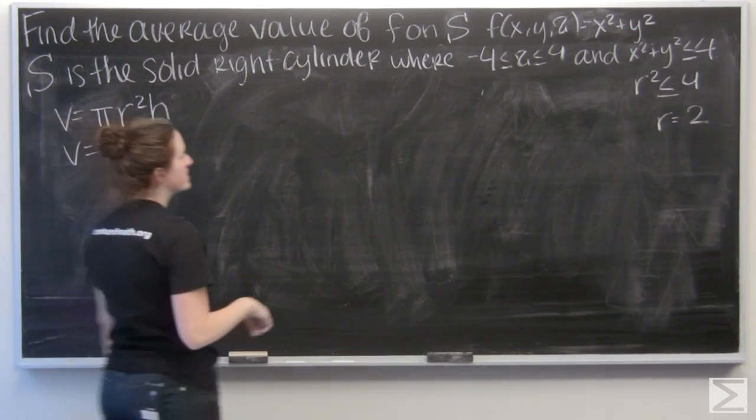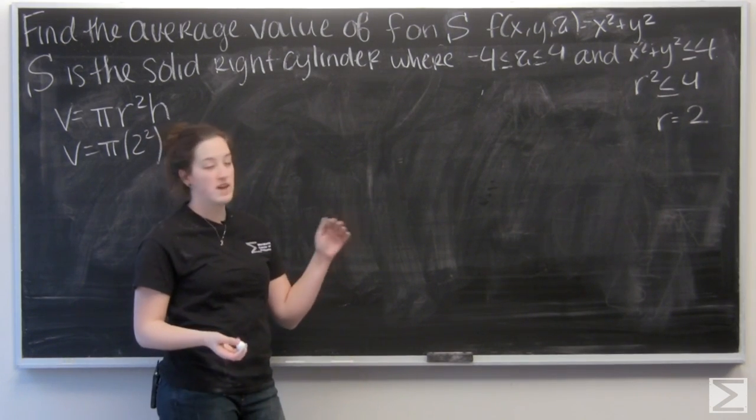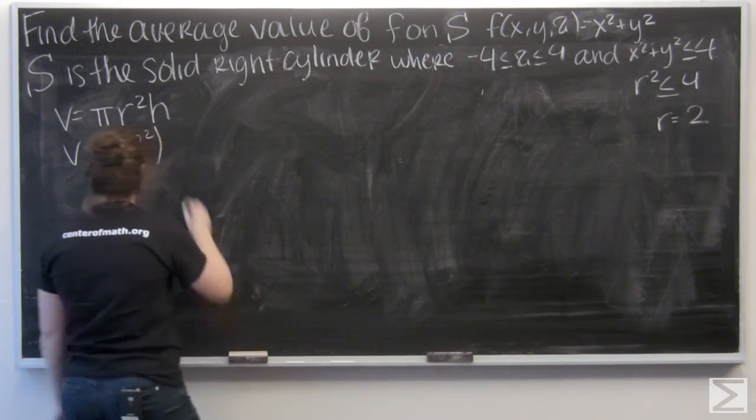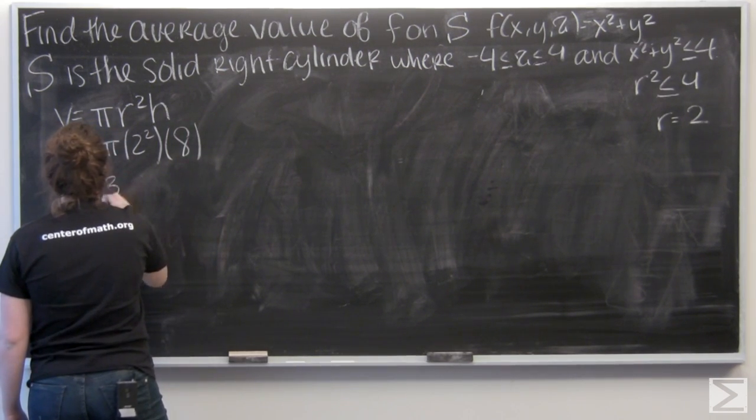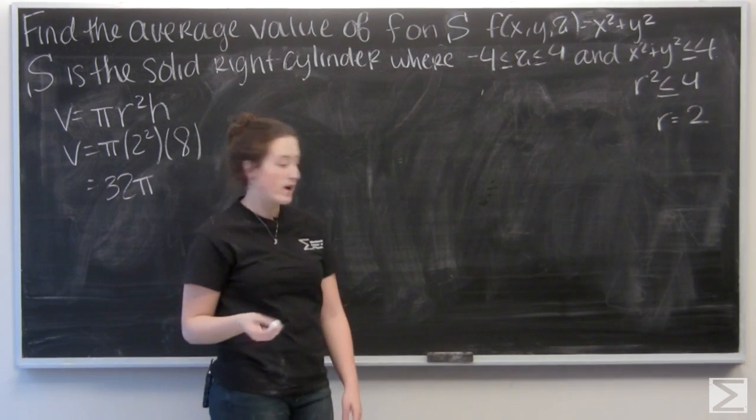And then for height, I know z goes from negative 4 to 4. That's a total distance of 8, so that's going to be my height. So that gives me a volume of 32 pi.